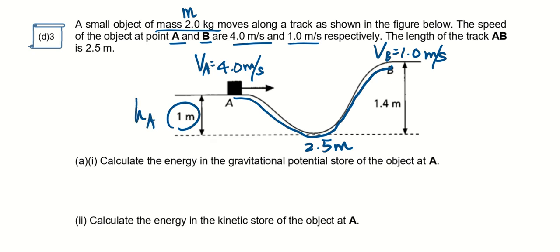At A the height is 1 meter, at B the height is 1.4 meters. So calculate the energy in the gravitational potential store: Ep of the object at A equals mgh, so the mass is 2, the g is 10, the height is 1, so it is 20 joules.